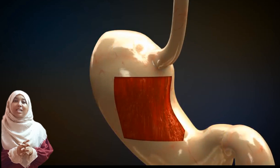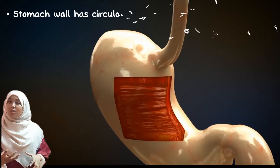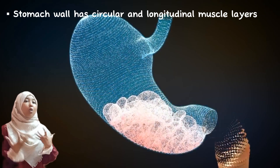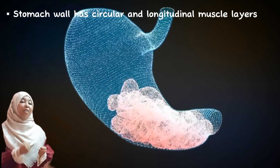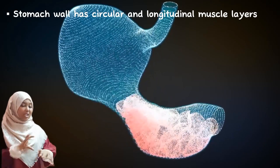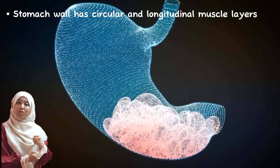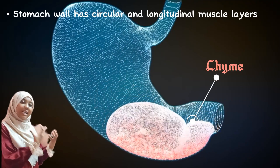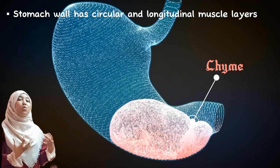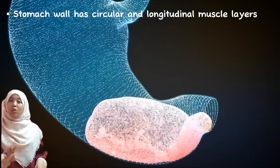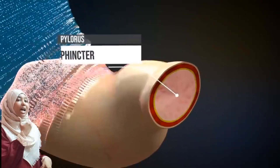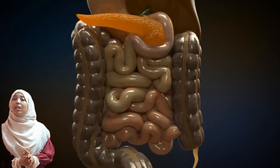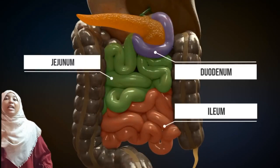Another fascinating thing about the stomach is that its walls are made of muscles that can contract and relax, thoroughly mixing the contents of the stomach. This is known as churning. This muscular movement results in a mixture known as chyme. The chyme is acidic, and it passes out of the stomach through the pyloric sphincter into the first part of the small intestine — the duodenum.